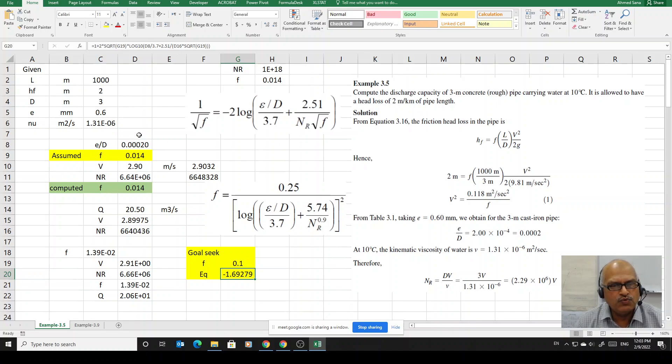The equation is just saying that 1 plus 2 times square root of f, the f is here, into log 10, log to the base 10 of d8. And what is d8? That is epsilon over d or e over d relative roughness divided by 3.7. This equation we are just going to write down plus 2.51 divided by Reynolds number from d16, and d16 is here, multiplied by square root of f. All of this thing is in the denominator, so that's what we have done here by putting the brackets there.